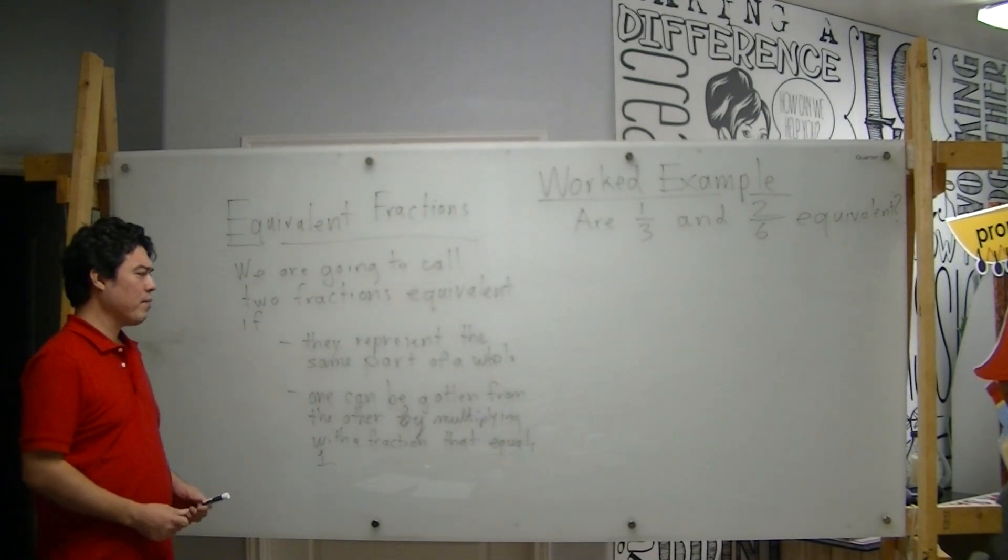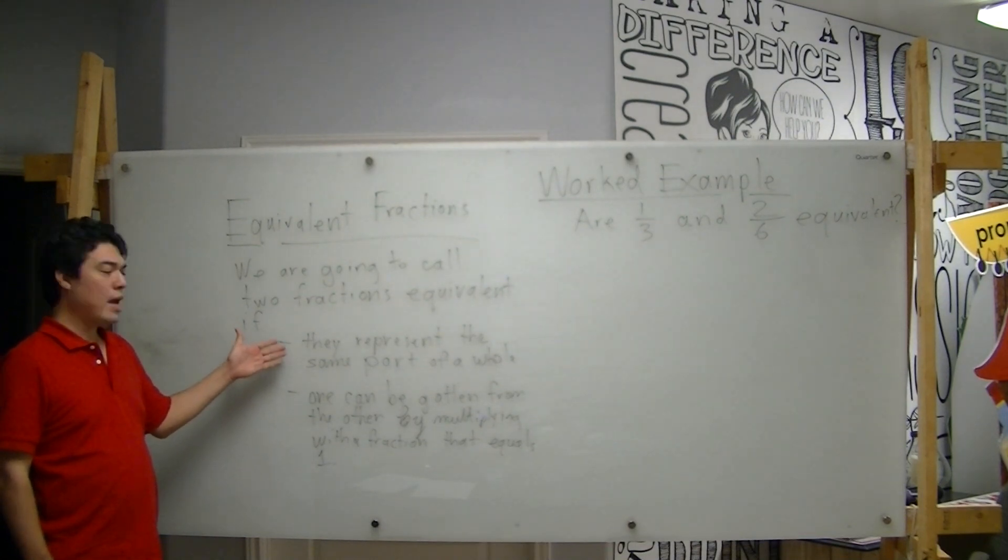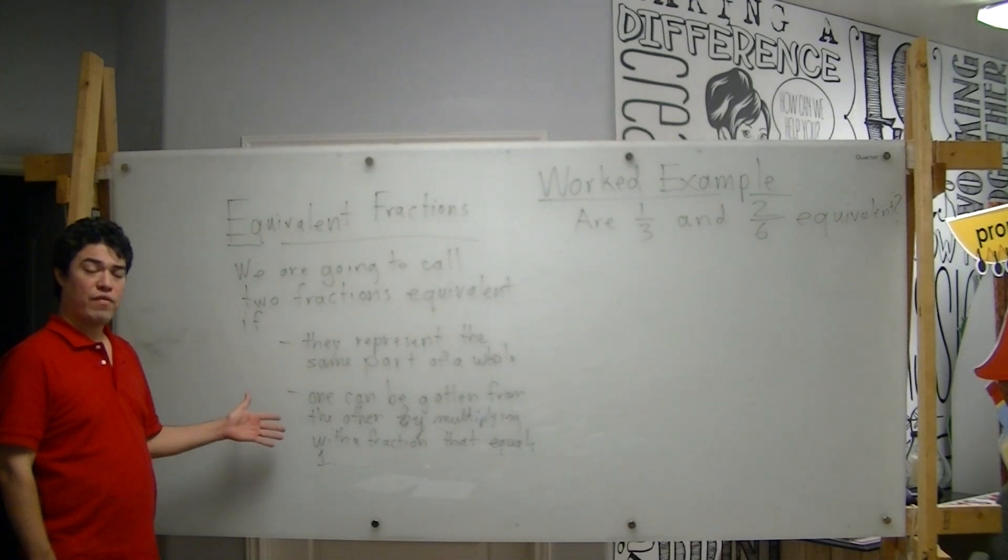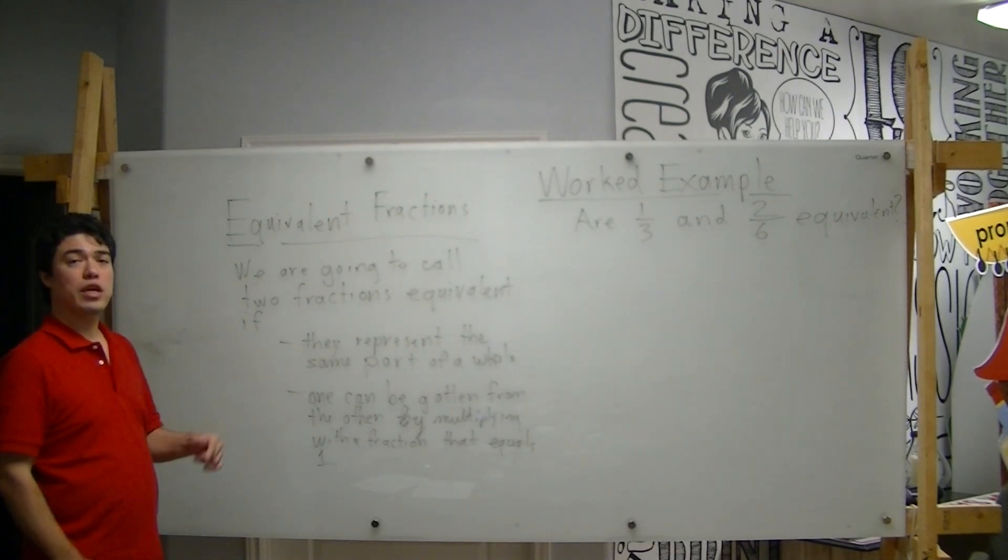That is to say, on the one hand, do they represent the same part of a whole? And on the other hand, can we show analytically that they're equivalent fractions by finding a fraction that equals one that we can multiply by one of these fractions to get the other?